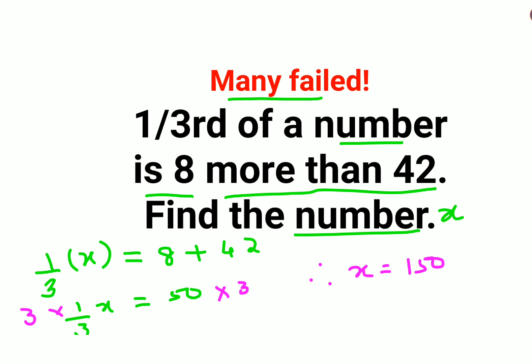Now let's put it back into the equation: 1/3 × 150 gives you 50. Similarly, 8 + 42 also gives you 50. Therefore when x is 150, the entire equation is correct — all values are satisfied. That's it for today, I will see you in the next video.